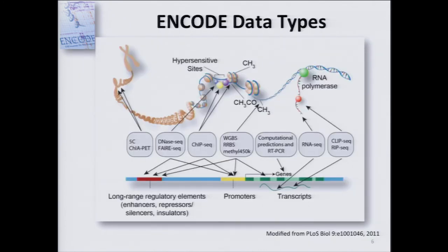ENCODE has been built upon decades of research into gene regulation. Many mechanistic studies over the years have learned biochemical signatures from events that appear to be causal for gene regulation. What ENCODE is doing — along with other projects and investigators — is to reverse engineer: using these signatures to predict where genes may be, transcripts from those genes, and regulatory regions such as promoters, enhancers, and insulators.